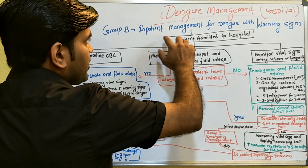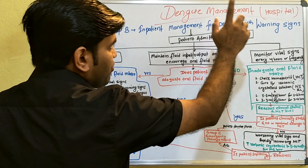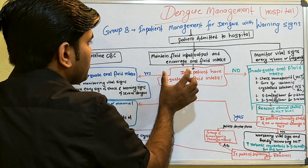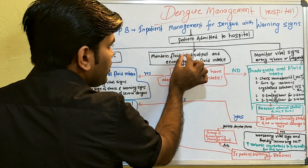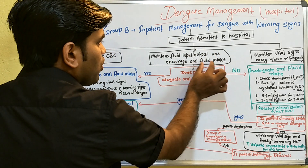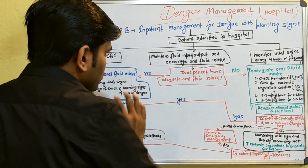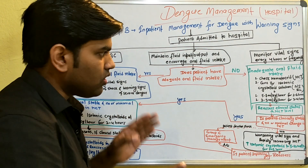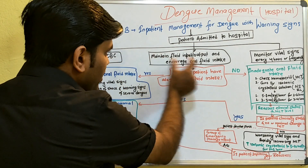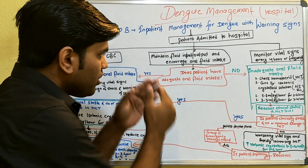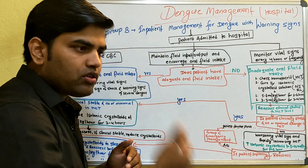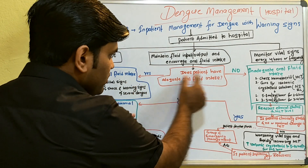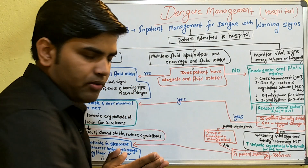Now let's look at the initial inpatient management of Group B patients with warning signs. When admitted to the hospital, check maintenance fluid input and output and encourage oral fluid intake. The main aim is to assess the patient, maintain your input-output chart, and if the intake is adequate, encourage oral fluids.